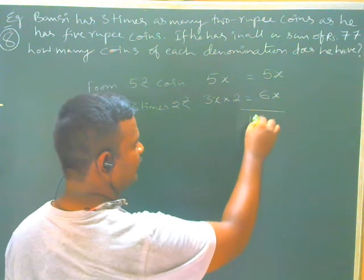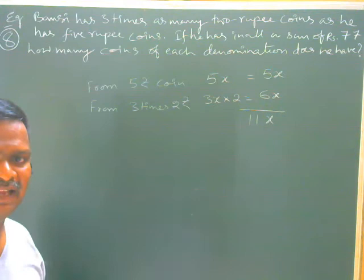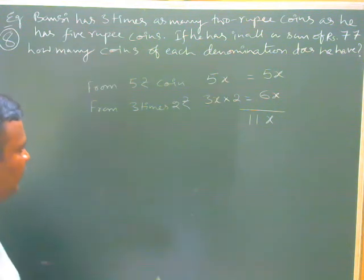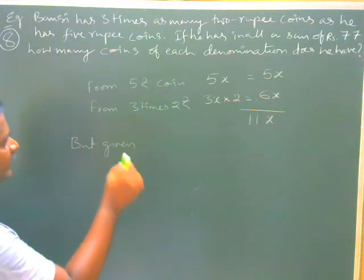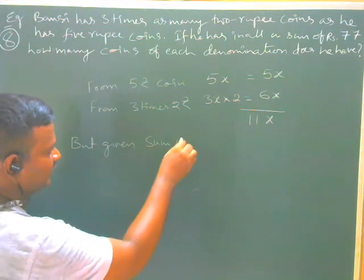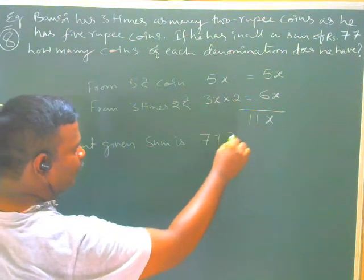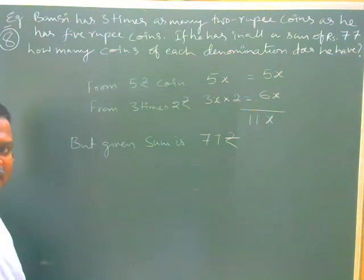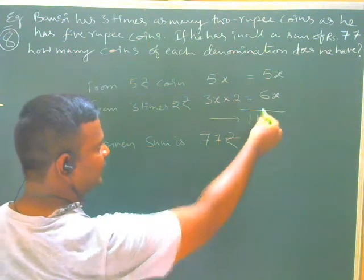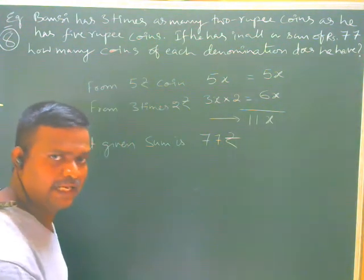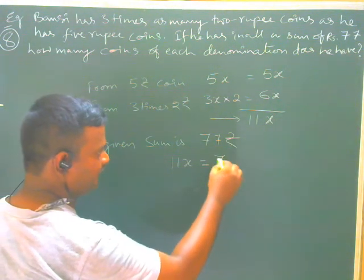Therefore, the total amount is: value from 5-rupee coins plus value from 2-rupee coins, that is 5X plus 6X, which gives us 11X. The total sum given is 77 rupees. So we get the equation: 11X equals 77.